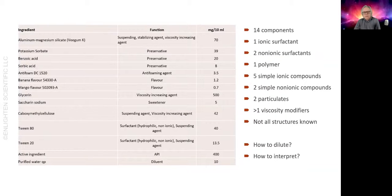This is the composition of the product I'm referring to. It has 14 components: one ionic surfactant, two non-ionic surfactants, a polymer, five simple ionic compounds, two simple non-ionic compounds, and two particulates - the drug itself and a clay to increase viscosity. There are more viscosity modifiers. Not all of the ingredient structures are known. Elucidating a mechanism in this system that could explain the observation leading to failure and linking that somehow to zeta potential is not going to happen.